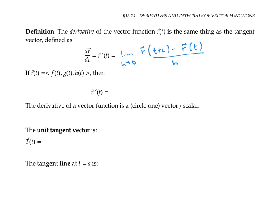If r is given in components — making it a three dimensional vector function — then r prime of t can be computed by taking the ordinary calc one derivatives of each component separately. The derivative of a vector function is a vector. Again, it's the same thing as the tangent vector.